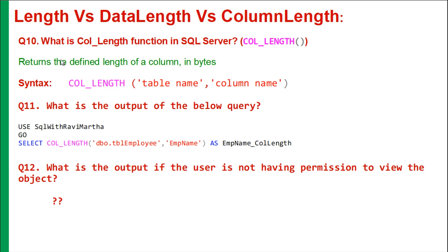Moving on to the next question: what is the column length function in SQL Server? The eleventh question is: what is the output of the below query when we use the column length function? And: what is the output if the user does not have permission to view the object?